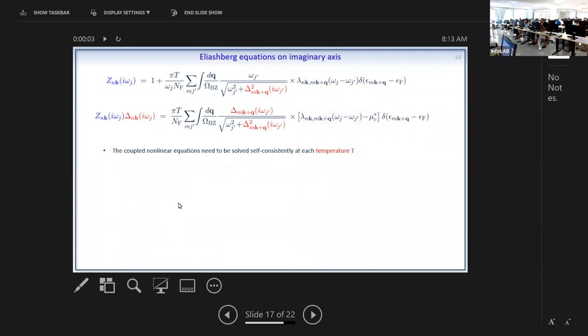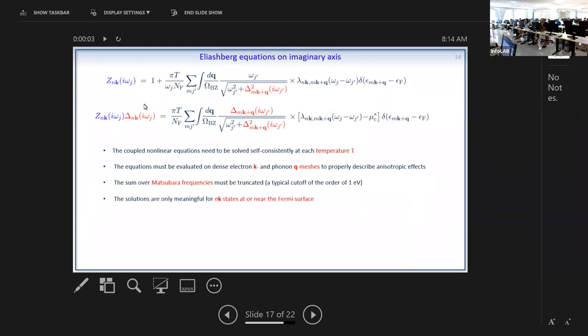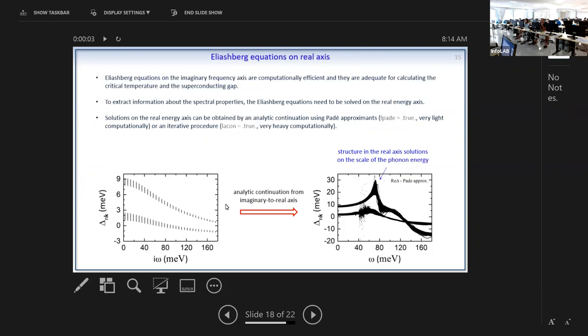I think I should speed up a bit. So just as a conclusion, these coupled equations need to be solved at every temperature. You can see that you have here the T. They must be evaluated on, in general, dense electron and phonon k-meshes to properly describe anisotropic effects. Then you need to have this sum over the Matsubara frequency, and for this particular case, if you only solve the two isotropic Eliashberg equations, they are only meaningful for states at or near the Fermi surface. You will see in the code these are the input flags to perform these calculations.